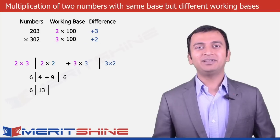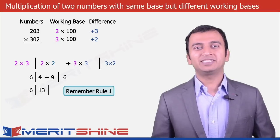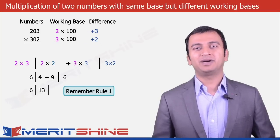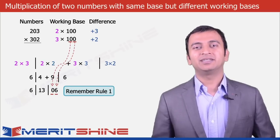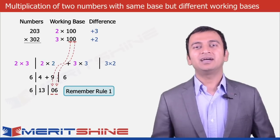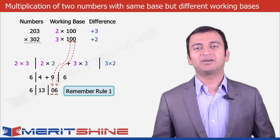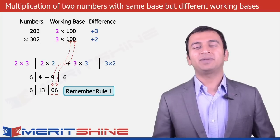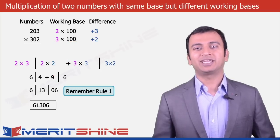Here comes Rule 1, which says the number of digits in the second part or third part will always equal the number of zeros in our base. So we will have to add an additional 0 in front of 6 to make it 2 digits. Now we can get our final answer by clubbing these three parts, which would be 6, 1, 3, 0, 6 — that is 61306.